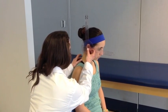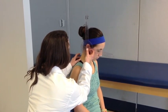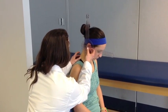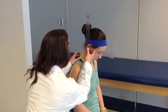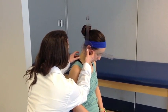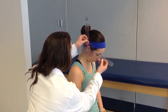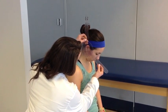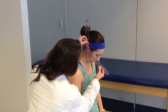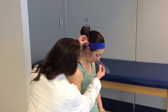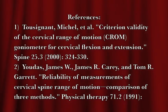The patient performs cervical flexion slowly while the therapist positions and reads the goniometer. The therapist reports: 'It looks like you're around 40 degrees.' The patient returns to neutral. The video concludes: 'And that's how you measure cervical flexion with the goniometer.'